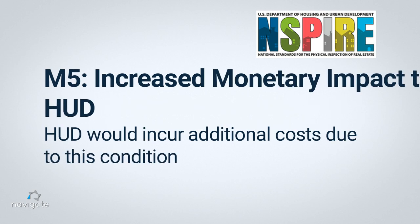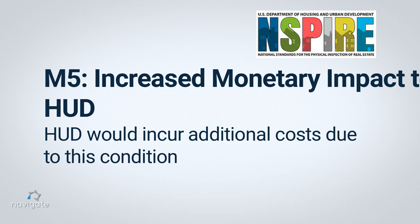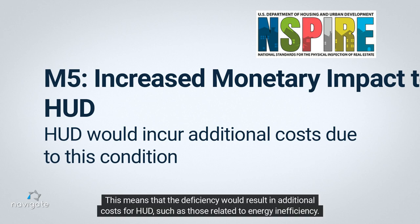The fifth code, M5, represents increased monetary impact to HUD. This means that the deficiency would result in additional costs for HUD, such as those related to energy inefficiency.